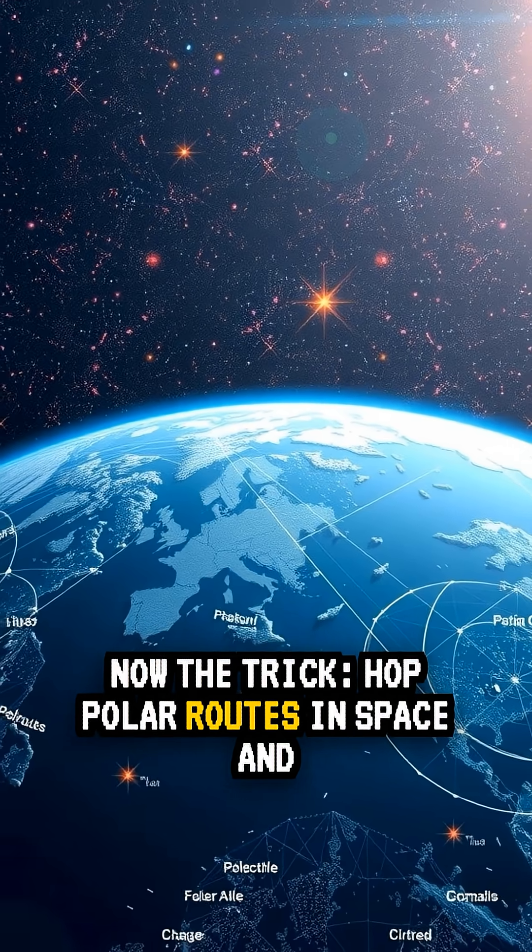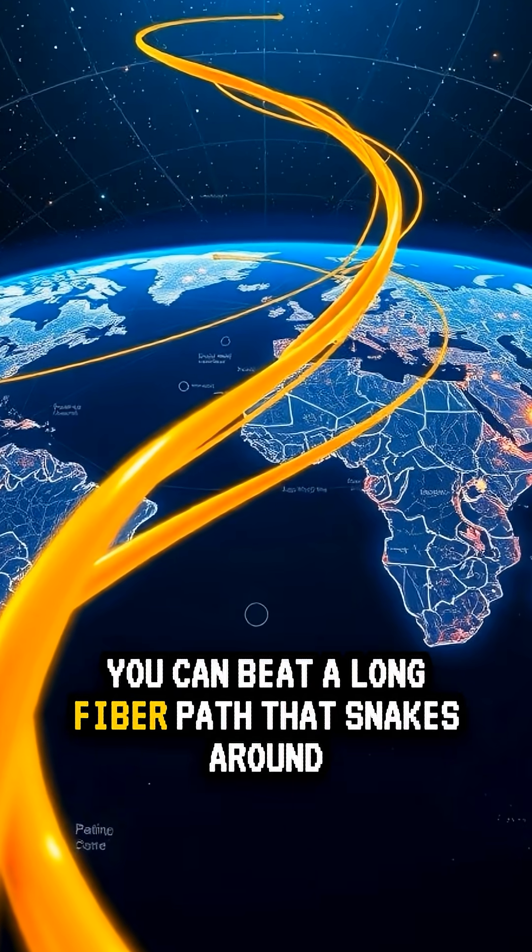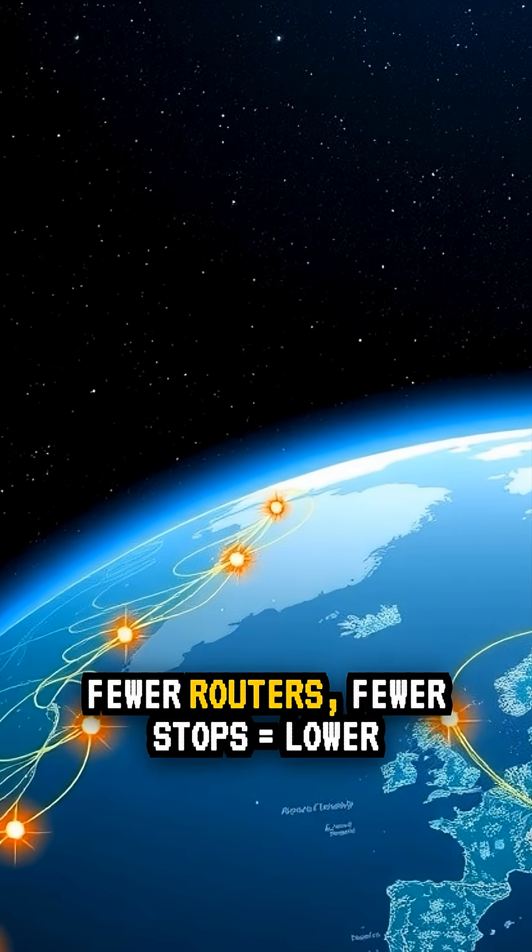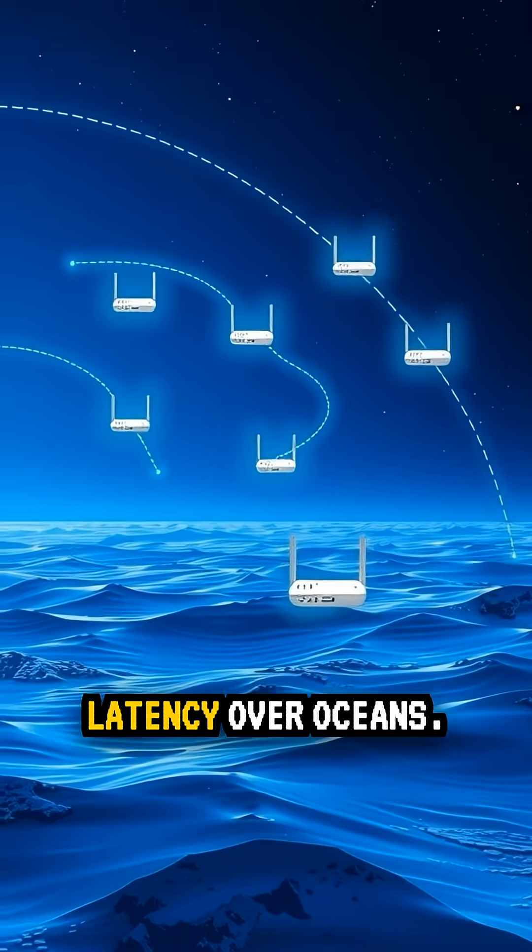Now the trick. Hop polar routes in space and you can beat a long fiber path that snakes around coastlines. Fewer routers, fewer stops, lower latency over oceans.